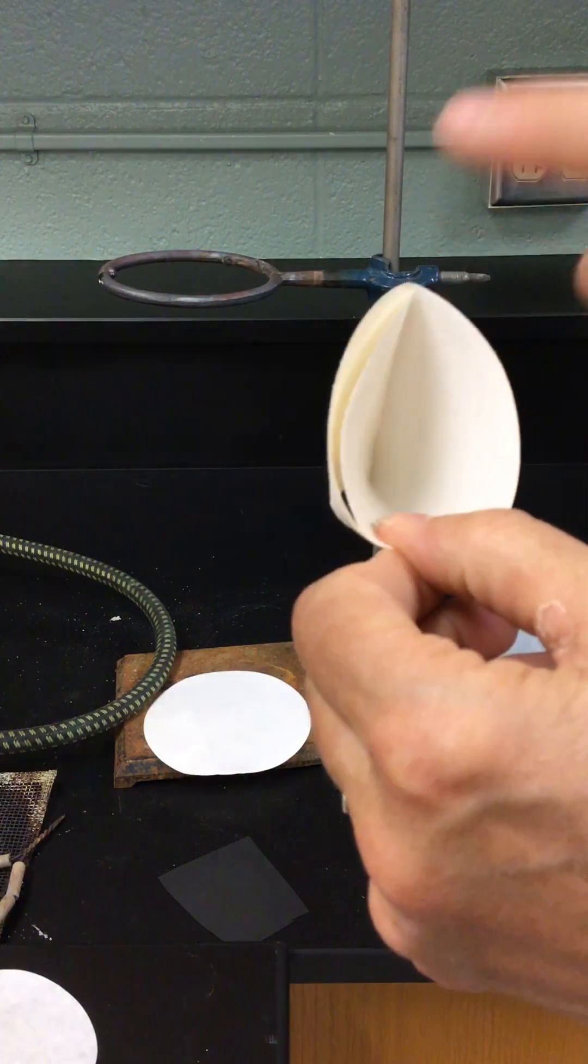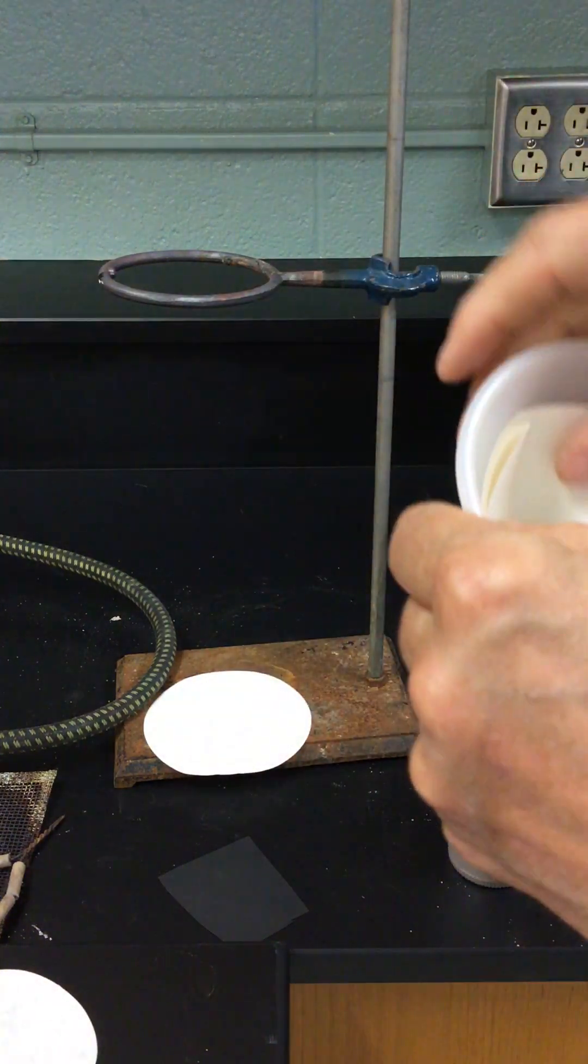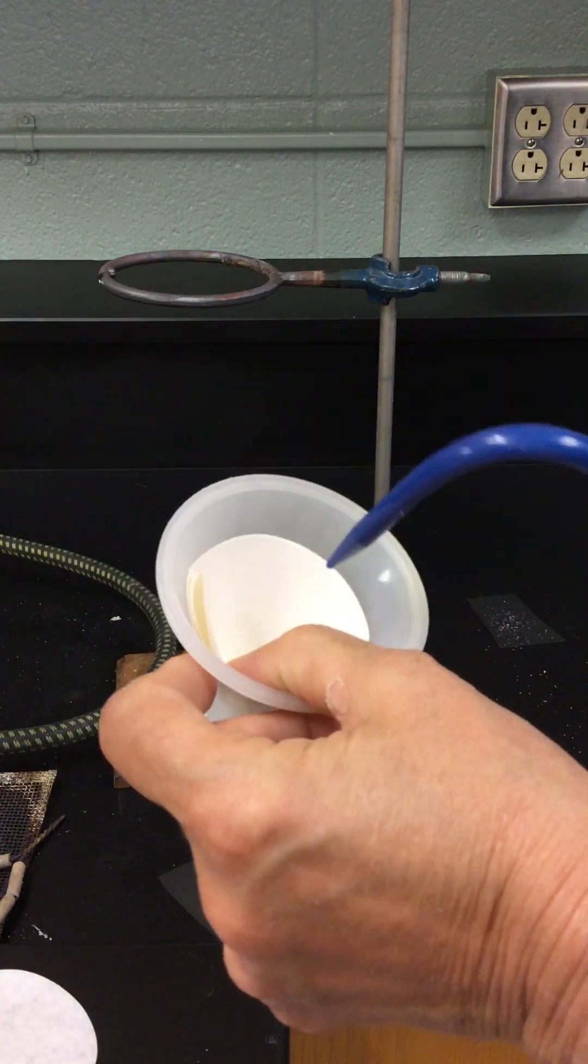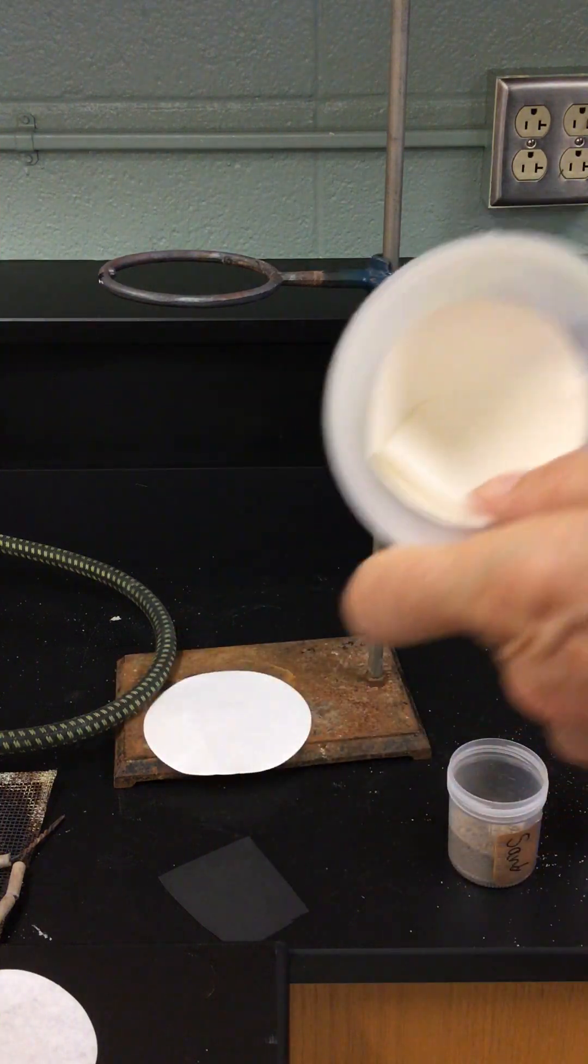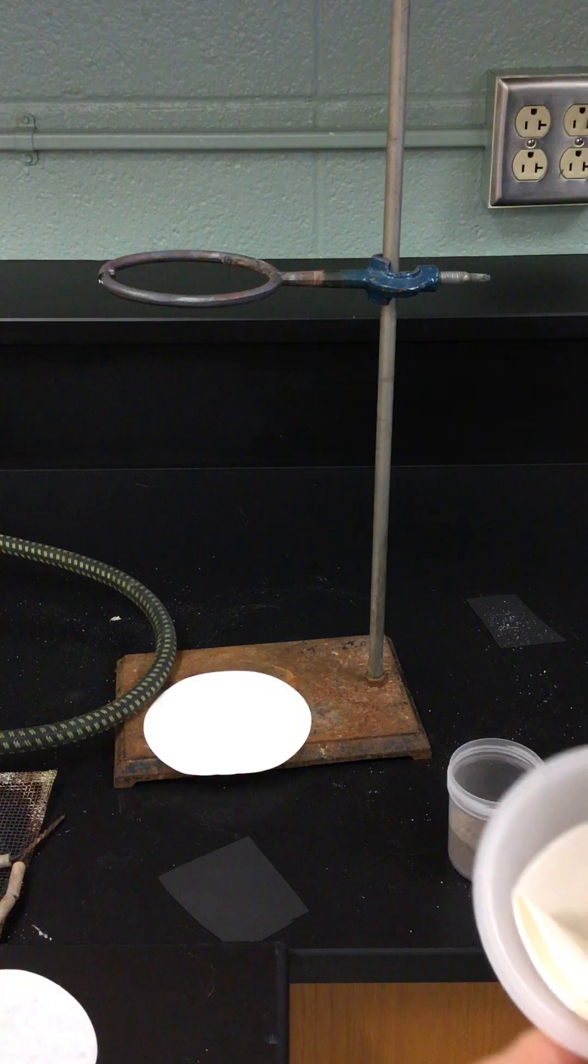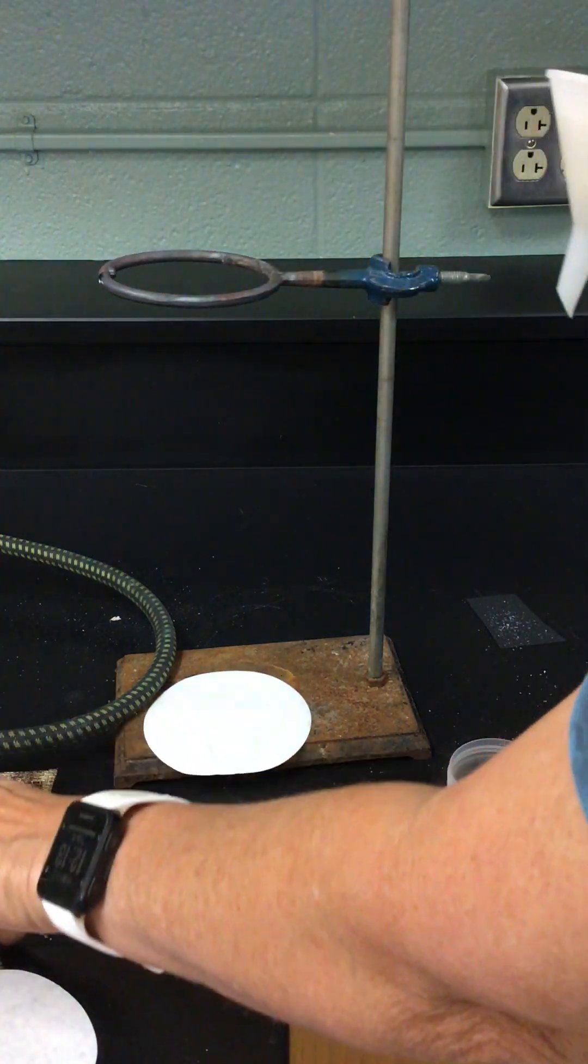We prepare a filter like this: we fold it in half, fold it in half a second time, we open it so that there's one piece of filter paper on one side and three on the other, place it into our filter. I usually hold it down and make it stay in its spot by giving it a little squirt of water.